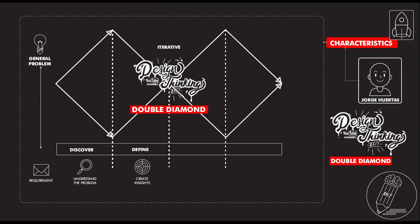After that, you start defining — that is the second stage. It means that you need to be very specific about which situation. At the beginning it's a general problem, but then you already start defining. It means that you need to have a clear focus group and a clear problem, so you know what you're doing.